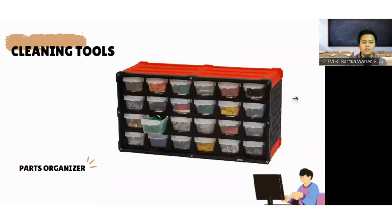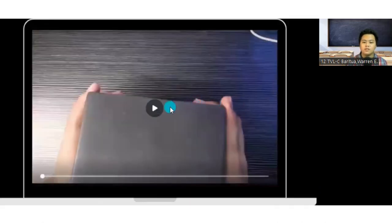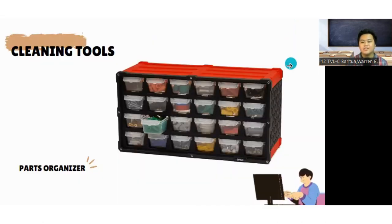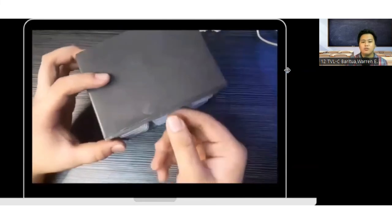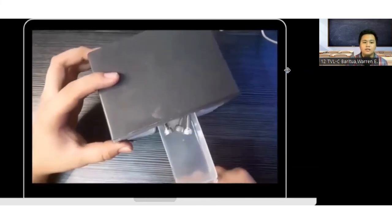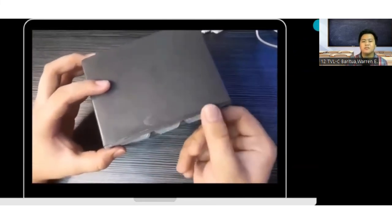Lastly for our cleaning tools is a part organizer. The tool organizer stores computer parts according to the size and quantity of the computer parts. The computer part organizer is divided into various compartments by one or more removable isolation boards. This one also comes in different sizes and materials.